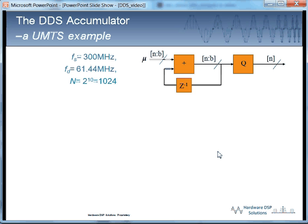Let's see how that works in the example. In this case, we're going to pick a desired frequency of 61.44 megahertz, which is a common value in UMTS and digital communications. Our table size is going to be 1K, which means we have 10 bits. And we're sampling at 300 megahertz, which is a comfortable frequency for most FPGAs. So, given these values, what should our step size be?